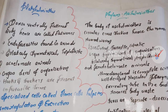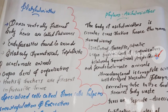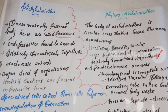First one: Platyhelminthes. We are going to study the dorsoventrally flattened body — that is also called the flatworms. Platyhelminthes are endoparasites. Endo means inside, so endoparasites live inside the host body, whereas ectoparasites live on the outside.